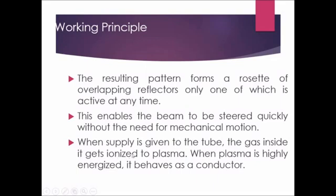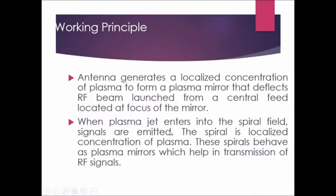When plasma is highly energized, it behaves as a conductor. The antenna then generates a localized concentration of plasma to form a plasma mirror that deflects the RF beam launched from a central feed located at the focus of the mirror. When the plasma jet enters the spiral field, signals are emitted and the spiral is a localized concentration of plasma. These spirals behave as plasma mirrors, which help in the transmission of RF signals.